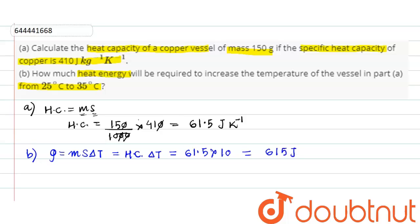Thus, our final answers are: heat capacity is 61.5 joules per kelvin, and heat energy required to raise the temperature by 10 degrees Celsius is 615 joules. These are our final answers. Thank you, friends.